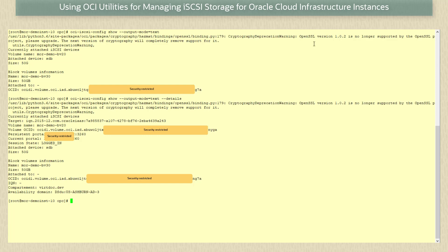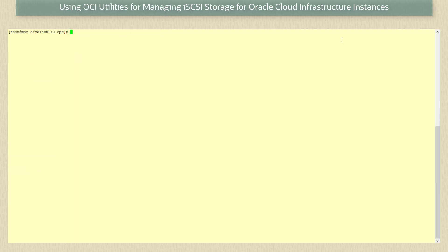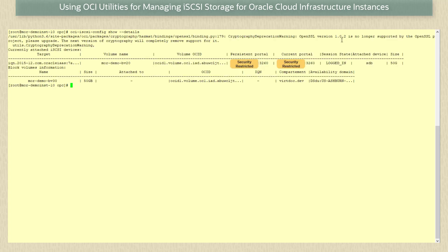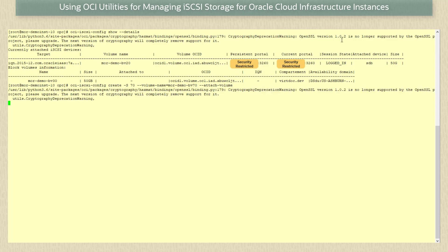We could now partition and mount the attached device, but for this demonstration it's not needed. Let's create a block volume device from our instance using oci-utils. Running the command oci-iSCSI-config show --details we see one attached device and one available device. We will now create a new device using the command oci-iSCSI-config create -S 70 --volume-name=mor-demo-bv70 --attach-volume, which creates a new block volume device of 70 gigabytes in size and attaches it to the instance.